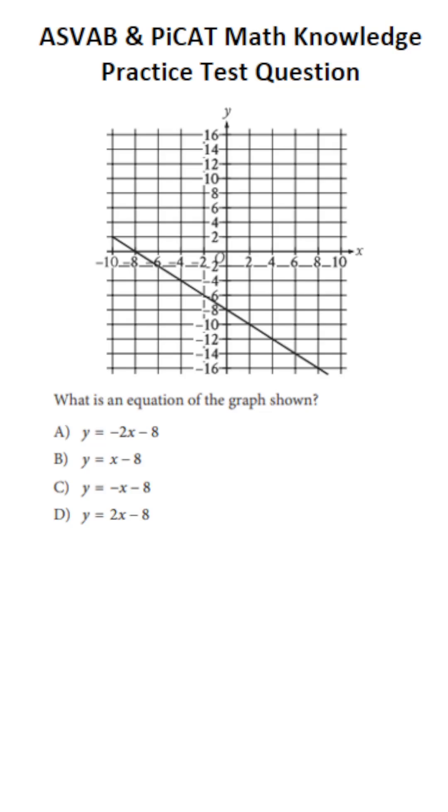This math knowledge practice test question for the ASVAB and PiCAT says, what is an equation of the graph shown? So in other words, we have to use this graph to write an equation of a line. And of course, you should know that the most common equation for a line is slope-intercept form. That is, y equals mx plus b, where m is the slope and b is the y-intercept.